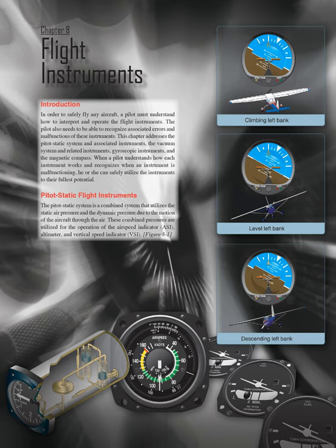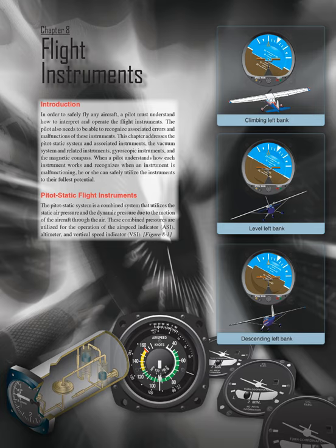Chapter 8: Flight Instruments Introduction. In order to safely fly any aircraft, a pilot must understand how to interpret and operate the flight instruments. The pilot also needs to be able to recognize associated errors and malfunctions of these instruments. This chapter addresses the pitot-static system and associated instruments, the vacuum system and related instruments, gyroscopic instruments, and the magnetic compass. When a pilot understands how each instrument works and recognizes when an instrument is malfunctioning, he or she can safely utilize the instruments to their fullest potential.